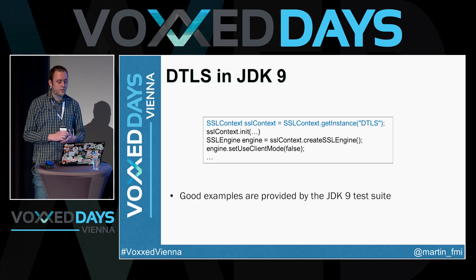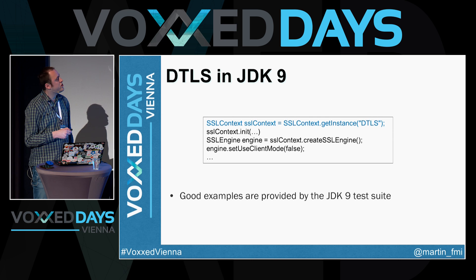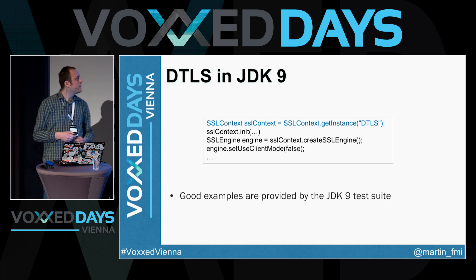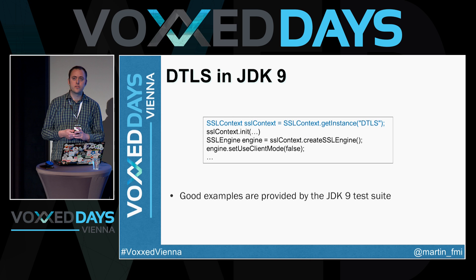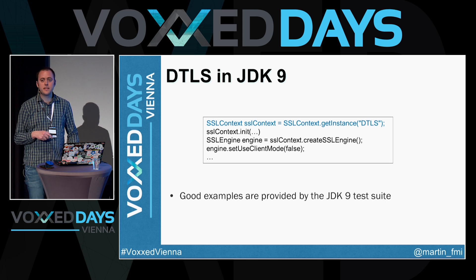To get started with DTLS, you call SSLContext.getInstance('DTLS') to get an SSL context instance, initialize it with parameters, and then create an SSL Engine instance from that context. Once you have the SSL Engine instance, you can start communication using the wrap and unwrap methods. There aren't many good examples in the JDK documentation, but the OpenJDK 9 test suite has five or six unit tests that cover DTLS and show how it's implemented.